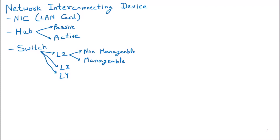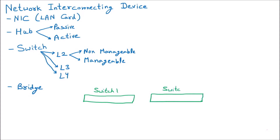We are discussing the next network interconnecting device, which is the bridge. To understand this device, I am taking one example. Let us suppose we are having three switches: switch one, switch two, and switch three. We can also take the example of a hub, but we are assuming switches since they are more popular. I am assuming each switch has four ports only, taking a small diagram.